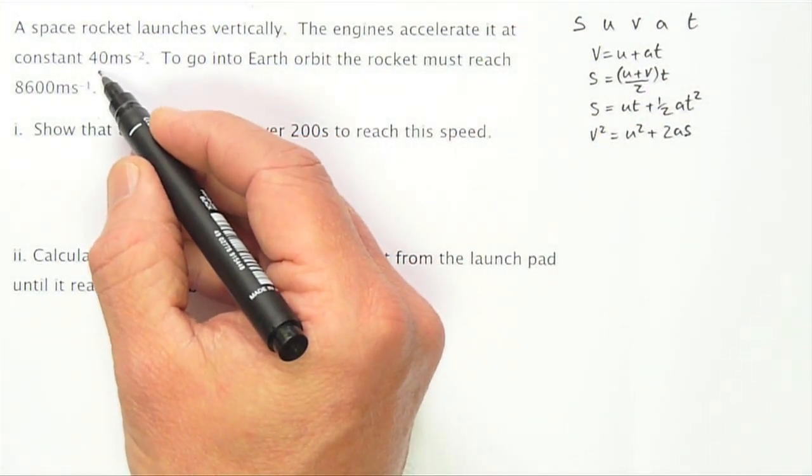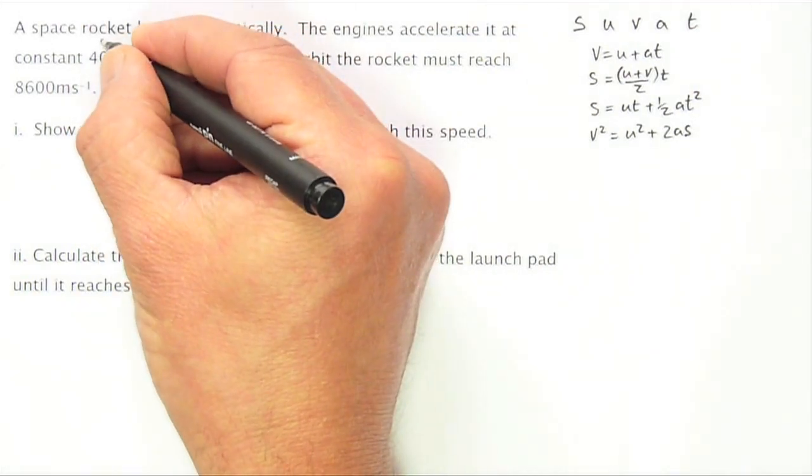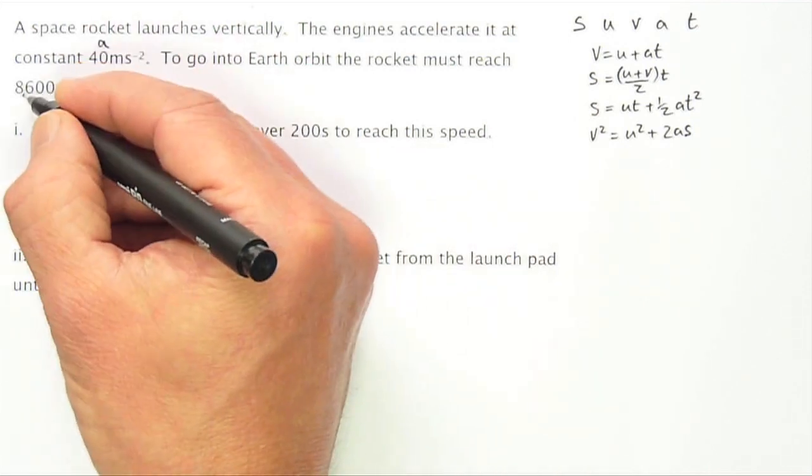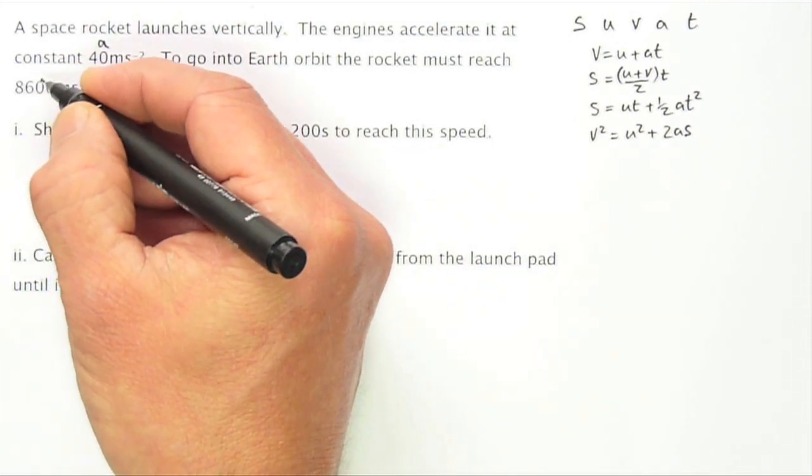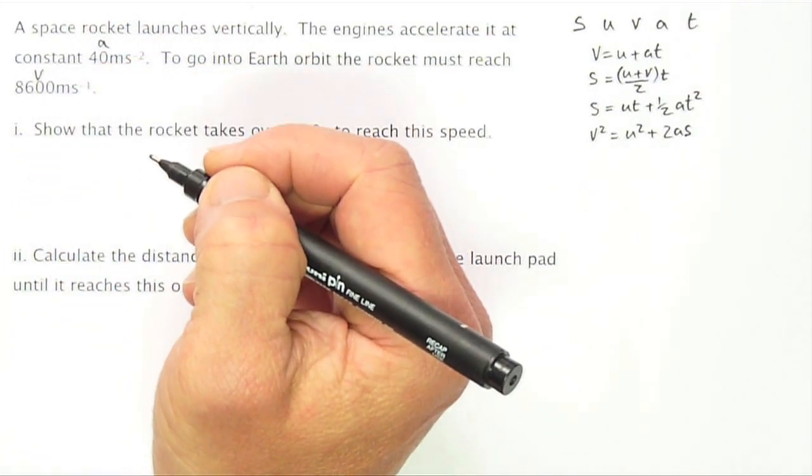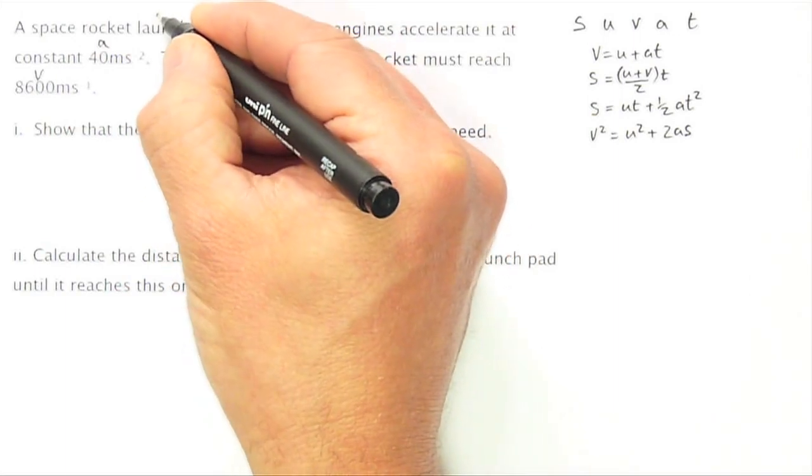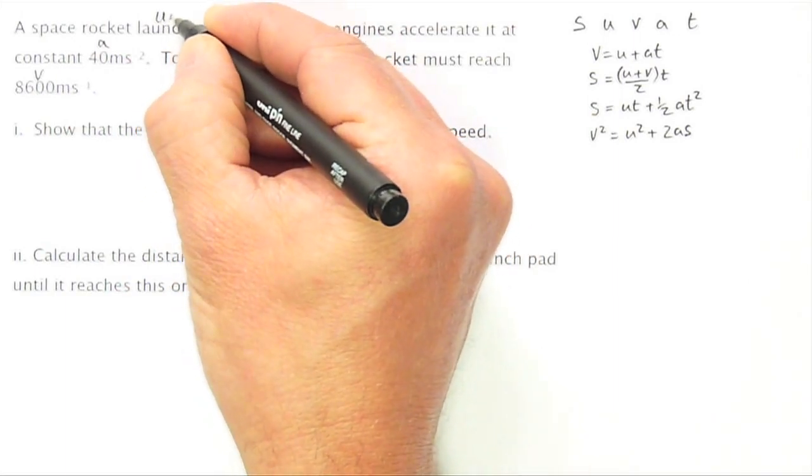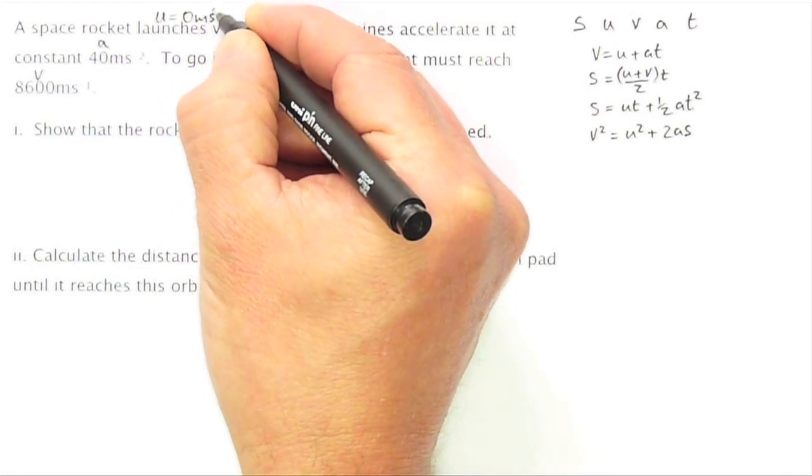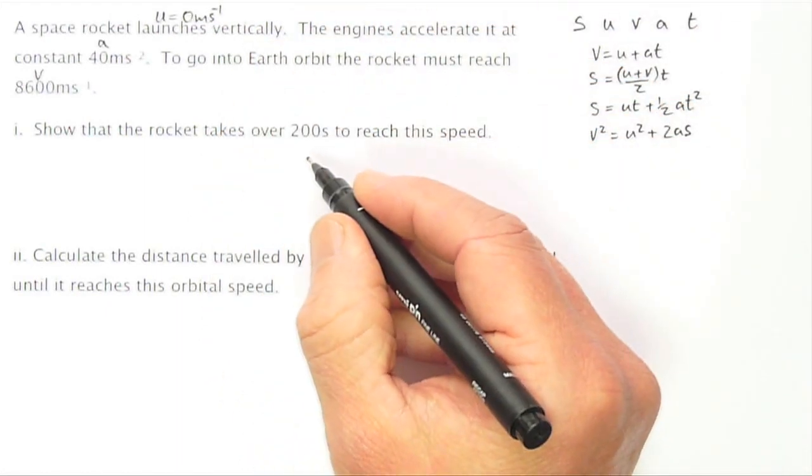The acceleration is given as 40 meters per second squared. This is A. The final velocity is given as 8600 meters per second. So that's the V. We're also given the initial velocity because we're saying it launches. So the initial velocity is equal to zero meters per second.